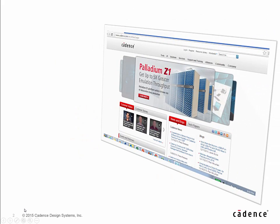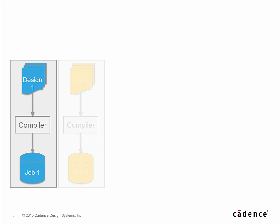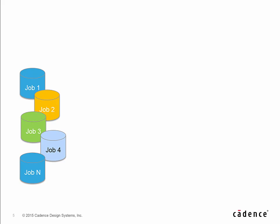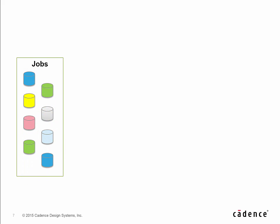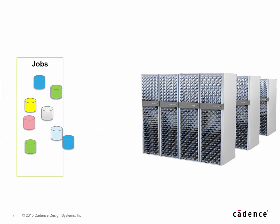Now this Tetris game is an analogy to the task of submitting verification jobs to a verification compute platform in the acceleration and emulation space of EDA. Here, users build or compile their verification jobs and submit them to a distributed resource manager, which queues up the jobs for submission into a verification computing platform. Now traditionally there's an efficiency delay in getting the jobs allocated to an available set of computing resources in a timely manner.